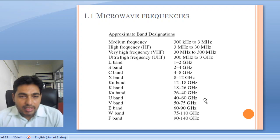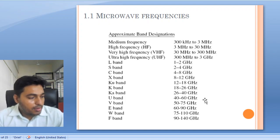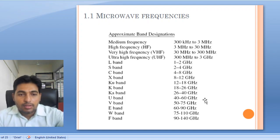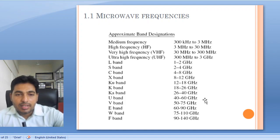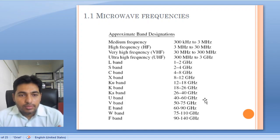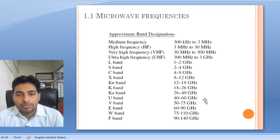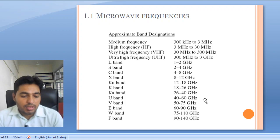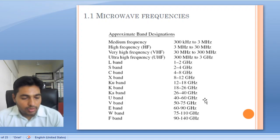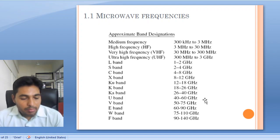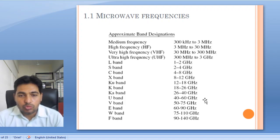Various bands are designated in microwave frequency — these are also called radar bands. We will start from the L band. Earlier bands include medium frequencies from 300 kHz to 3 MHz, high frequencies from 3 MHz to 30 MHz, and UHF from 300 MHz to 3 GHz. The L band is from 1 to 2 GHz.